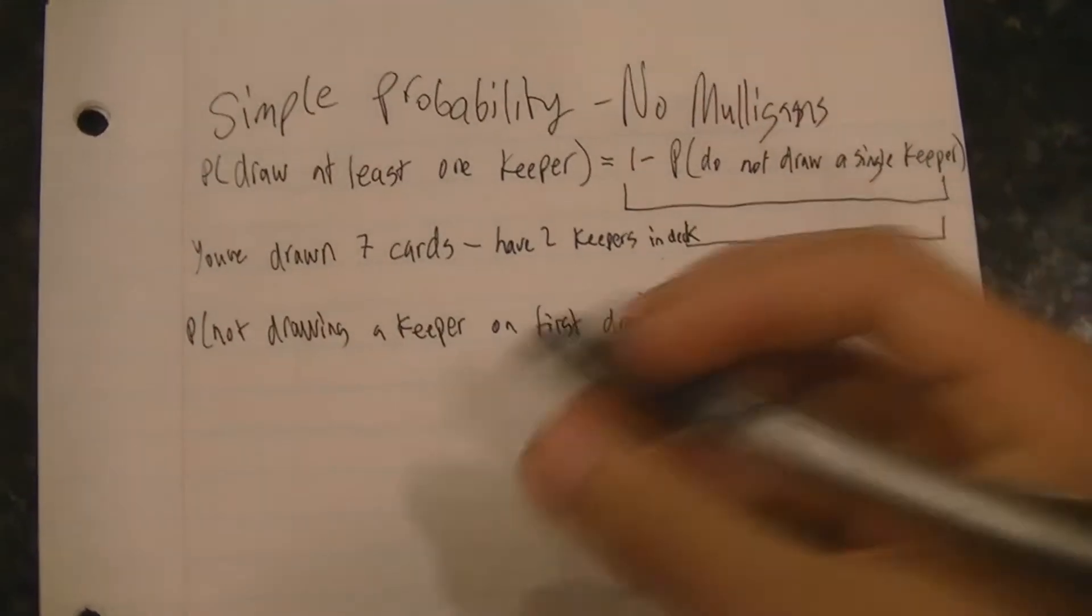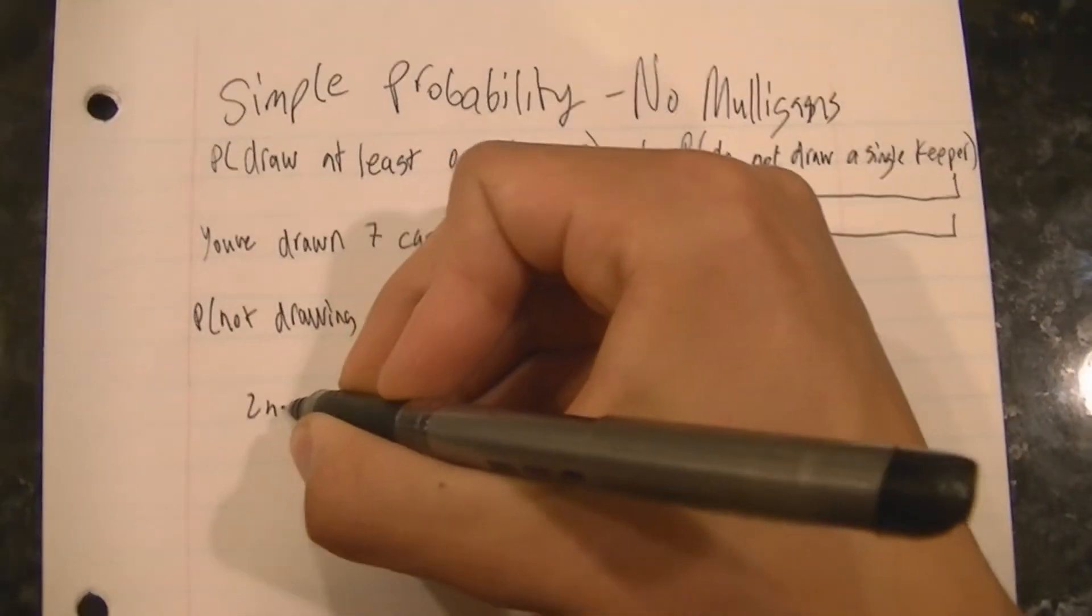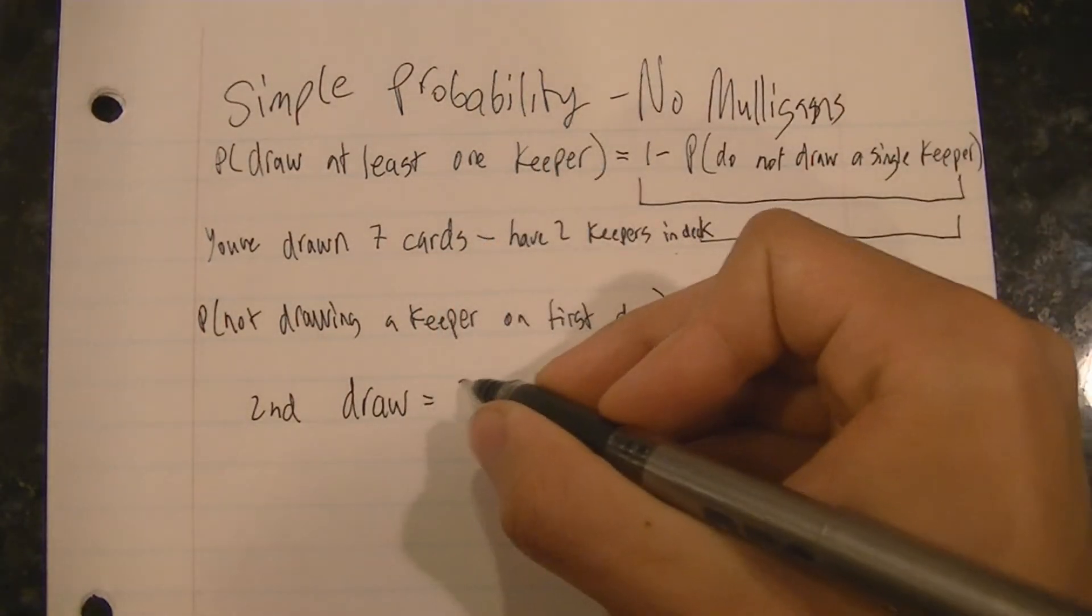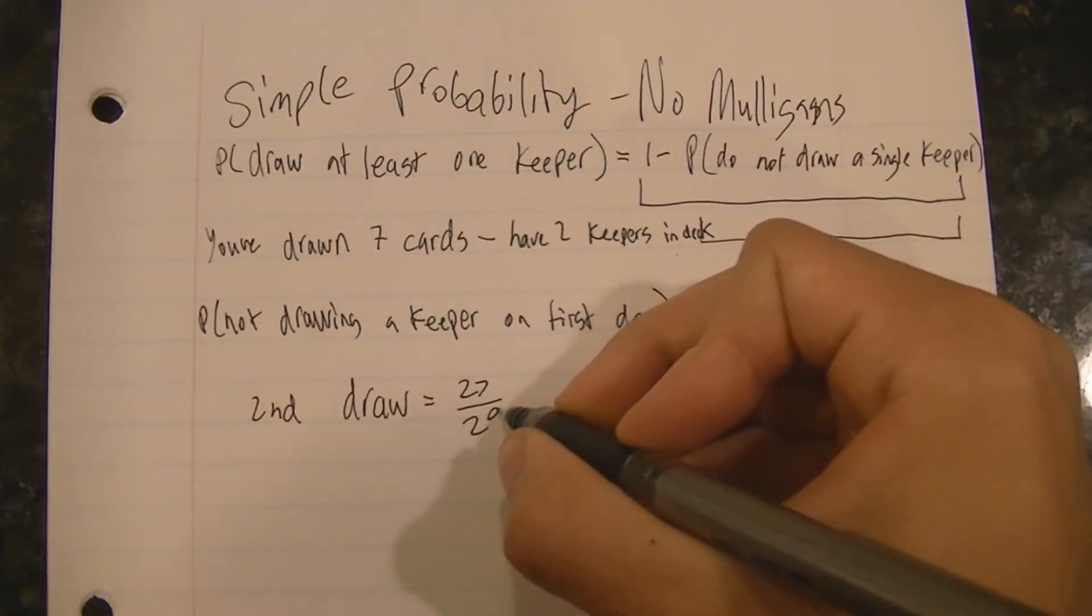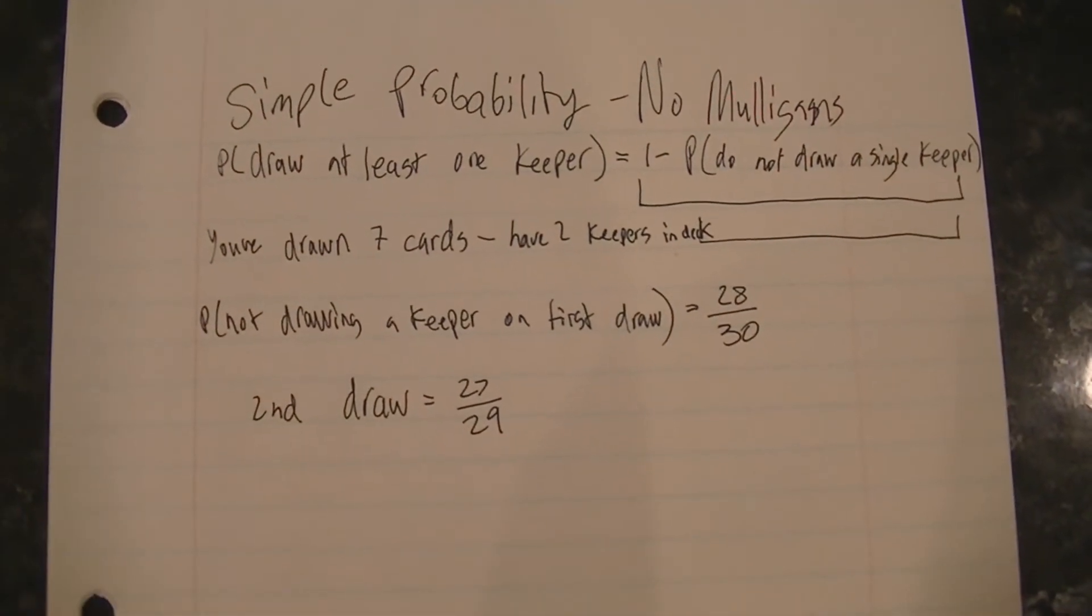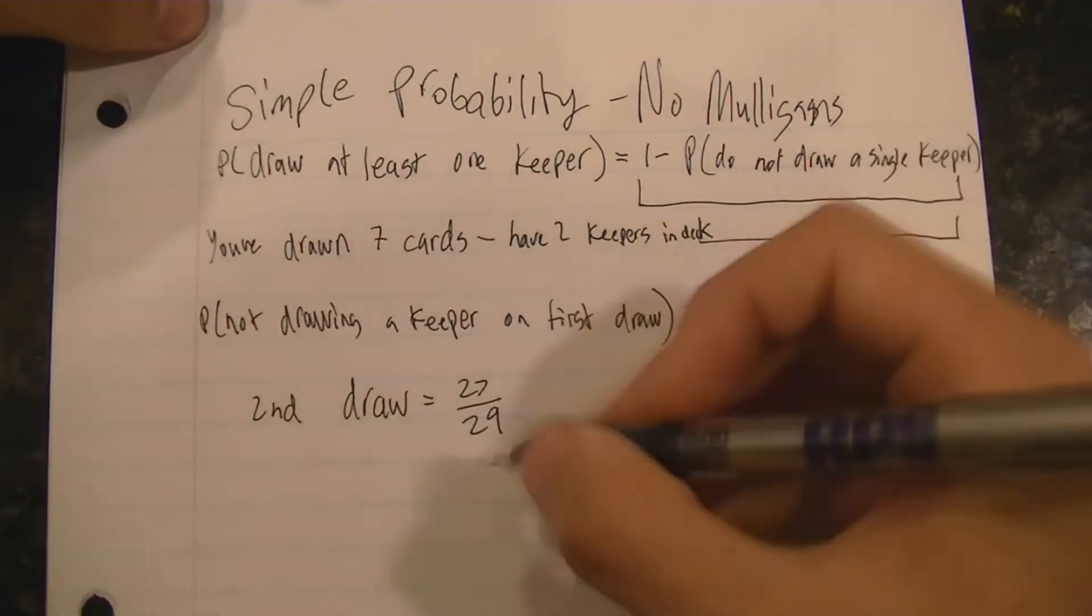Now you want to calculate the probability that on the second draw you do not draw a Keeper. And to do that you have to account for the fact that the deck has changed and now you've already drawn a card, so therefore there are only 29 cards total and only 27 of them are not the Keeper.